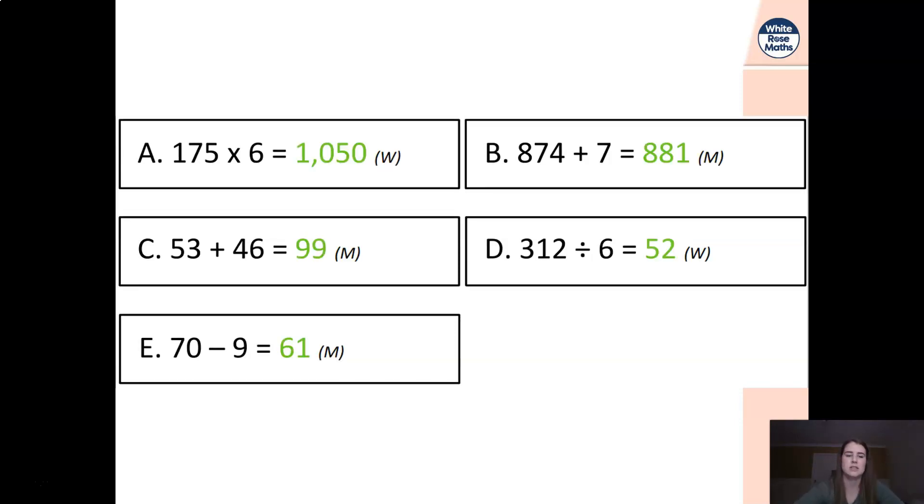Okay here are your answers. So A is 1050, B is 881, C is 99, D is 52 and E is 61. So well done if you've got all five of those correct. I'd expect most of you to be getting five out of five now, especially considering how amazing your arithmetic scores have been this time.